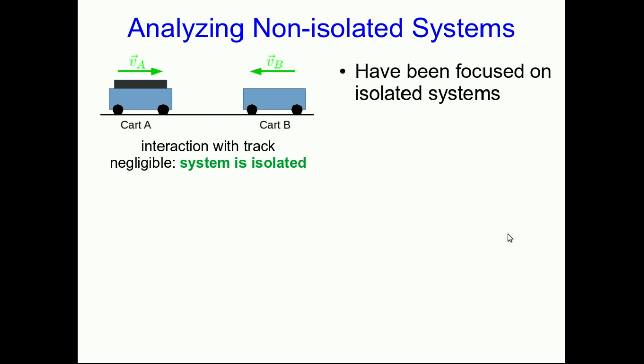Up until now in the course we've been very focused on isolated systems and looking at them we've developed some very powerful methodologies. If we take our typical example of carts colliding on a track, the system is isolated and so the momentum is conserved and that gives us an equation. If there's an unknown we might be able to solve for it using that equation.